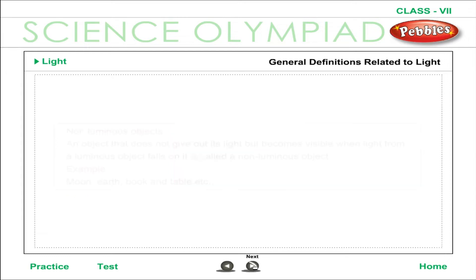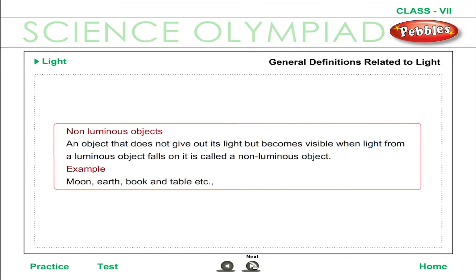Non-luminous objects: an object that does not give out its own light but becomes visible when light from a luminous object falls on it is called a non-luminous object. Examples include the moon, earth, book, and table.